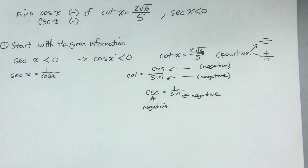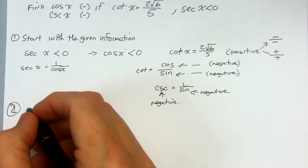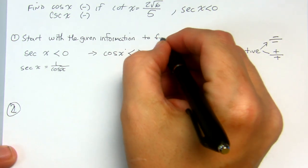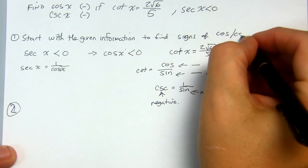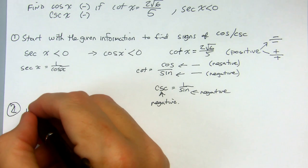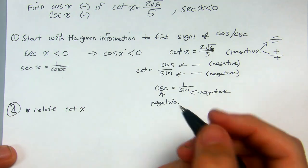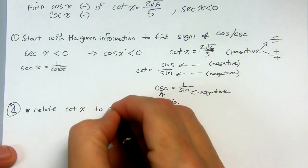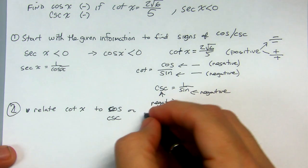Pythagorean identities, co-functions, even-odds — those are going to be helpful because they tell us what we need when dealing with all of these. Step two: we have to relate the cotangent of x, which we know, to the cosecant, using identities.